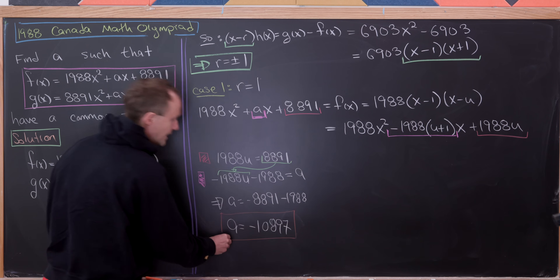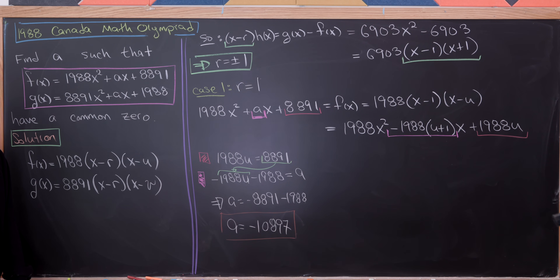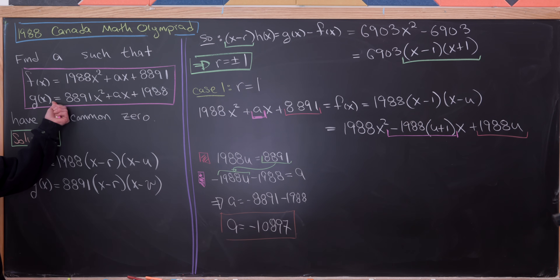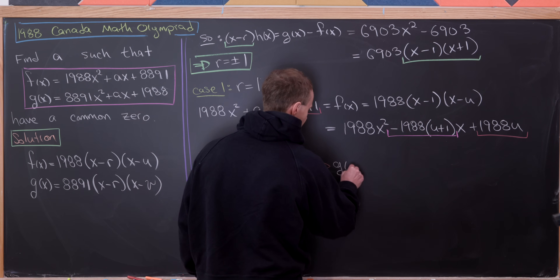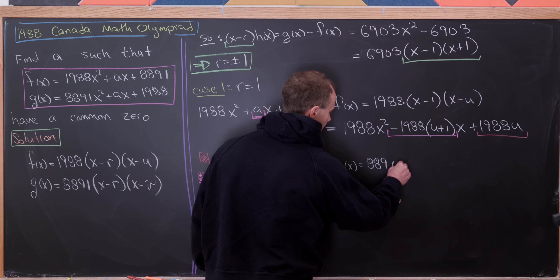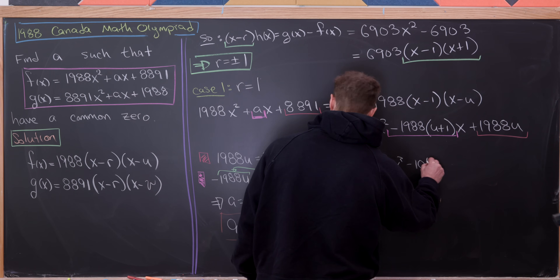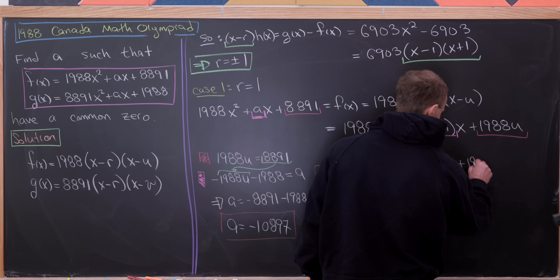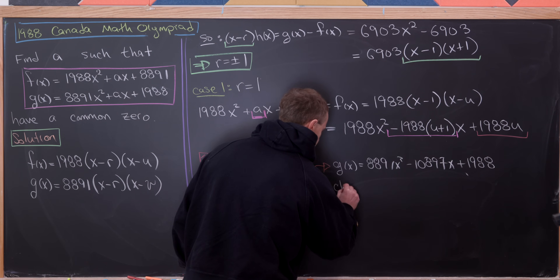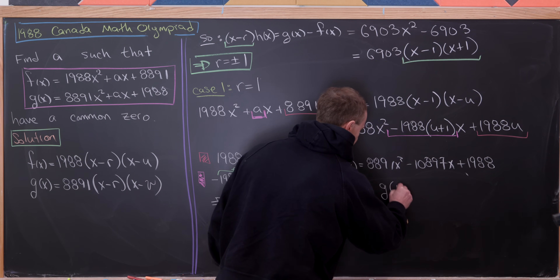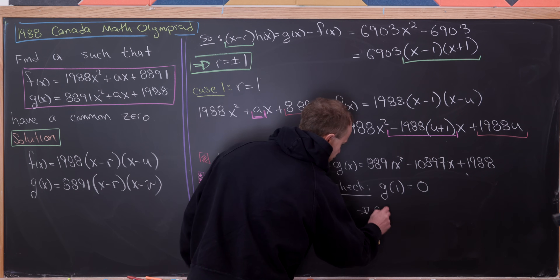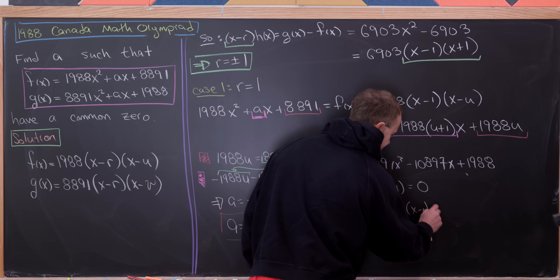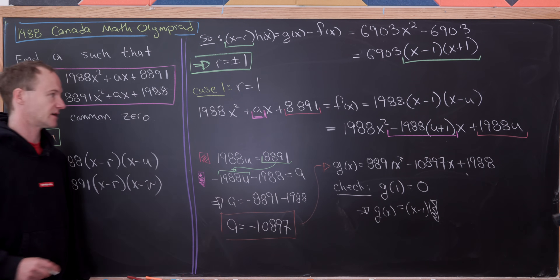Now we need to verify everything works. We plug a = -10,897 into g(x), giving g(x) = 8891x² - 10897x + 1988. We then check that g(1) = 0, which is a straightforward check confirming that g(x) has 1 as a root, meaning g(x) = (x - 1) times something.